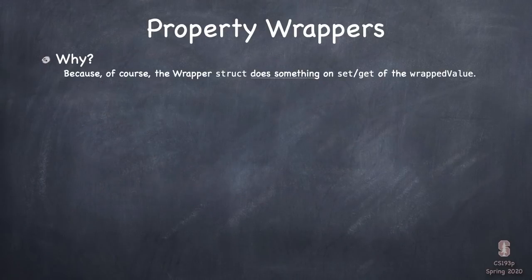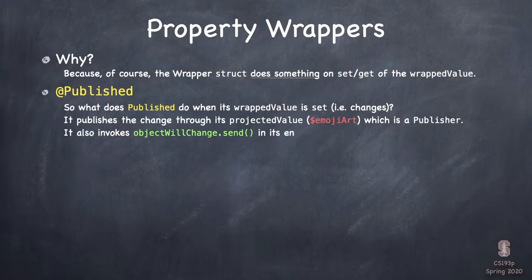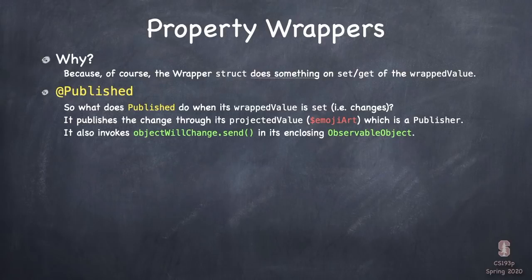Why do we do this property wrapper thing? The main point is that the wrapper struct, like Published, can do something when the wrappedValue is got or set — it can get involved. For example, @Published, when its wrappedValue is set, publishes it through its $EmojiArt publisher. Not only that, but @Published causes objectWillChange.send to happen in the ObservableObject it's in.